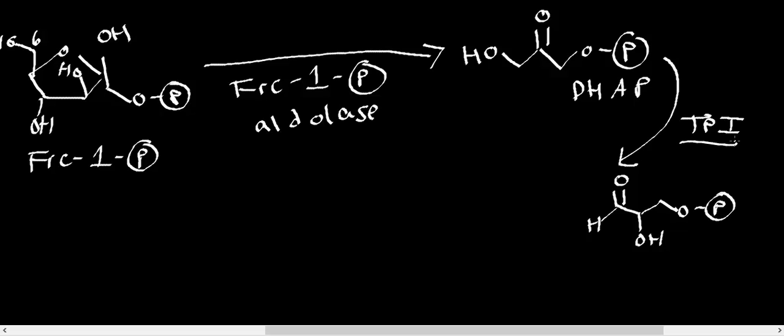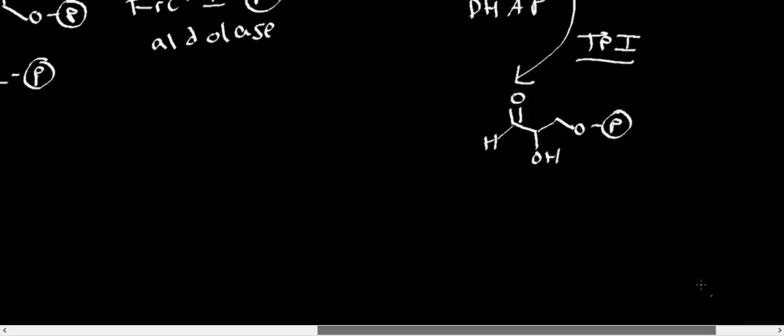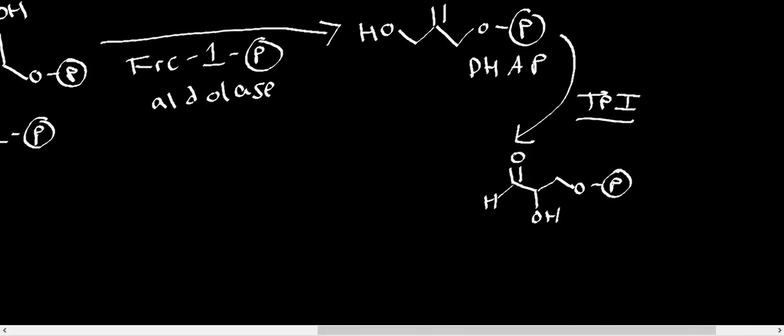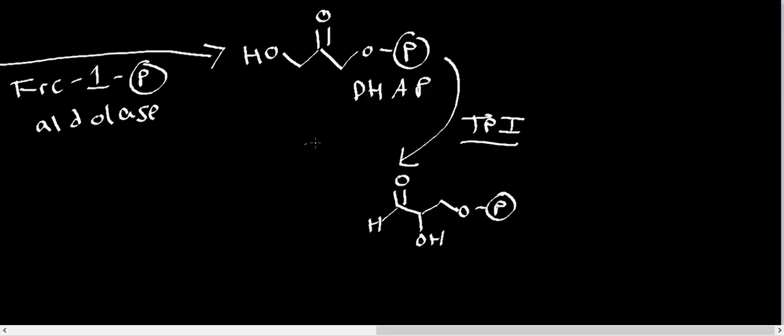And then that's what's directly used by glycolysis. But another product that is created by fructose 1-phosphate aldolase is glyceraldehyde. And this is actually without the phosphate. This is just straight glyceraldehyde.